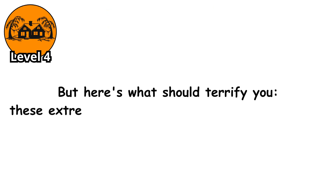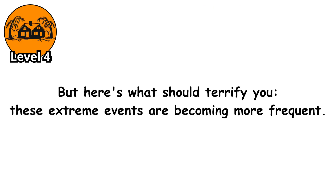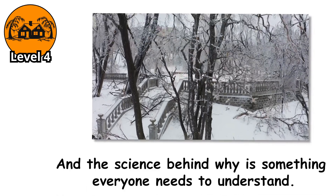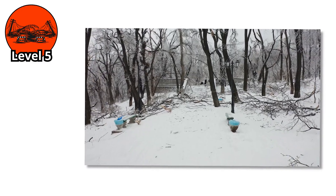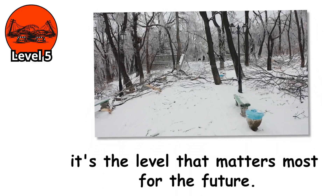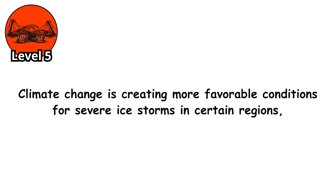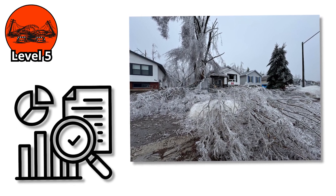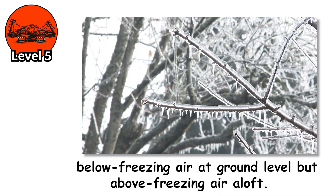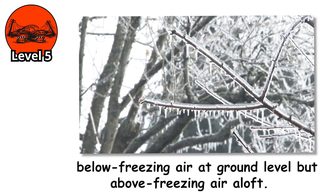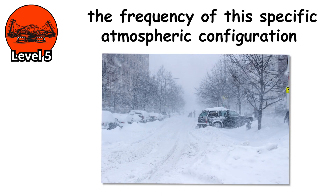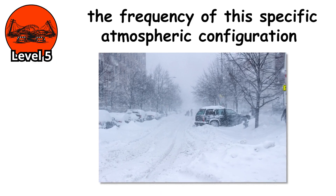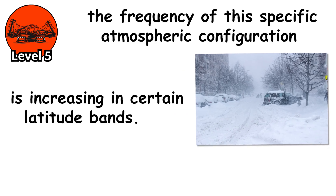But here's what should terrify you: these extreme events are becoming more frequent. And the science behind why is something everyone needs to understand. Level 5. This isn't a traditional level on the ice accumulation scale, but it's the level that matters most for the future. Climate change is creating more favorable conditions for severe ice storms in certain regions. Ice storms require below-freezing air at ground level, but above-freezing air aloft. As global temperatures rise, the frequency of this specific atmospheric configuration is increasing in certain latitude bands.